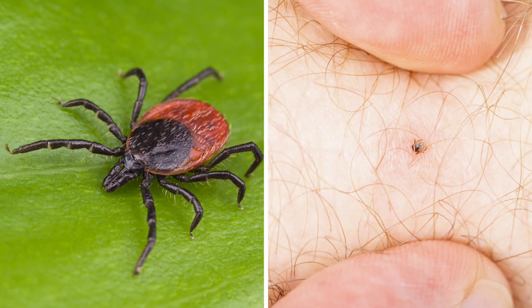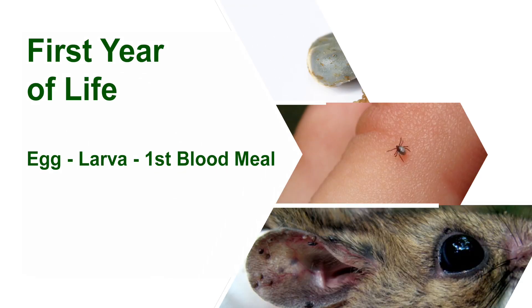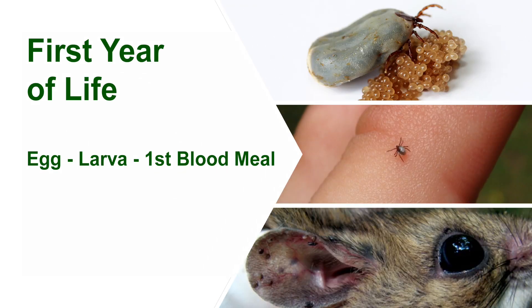Understanding the tick life cycle helps us create pest control strategies to prevent the spread of disease to humans and our pets. Deer ticks undergo a two-year, three-stage life cycle.